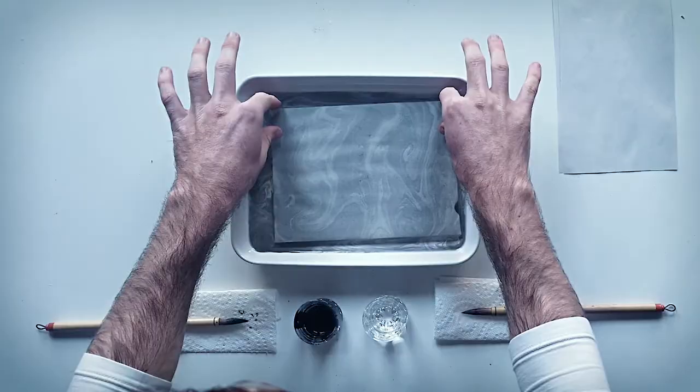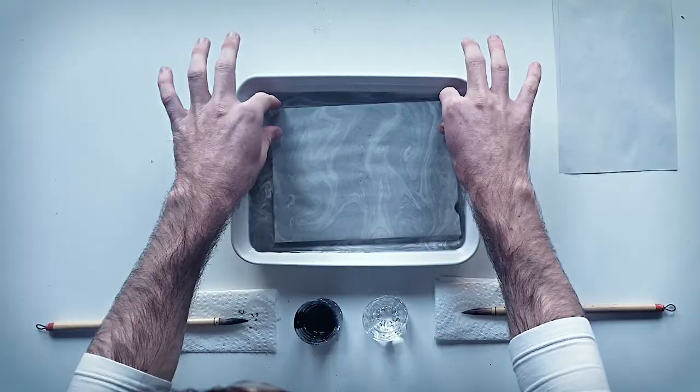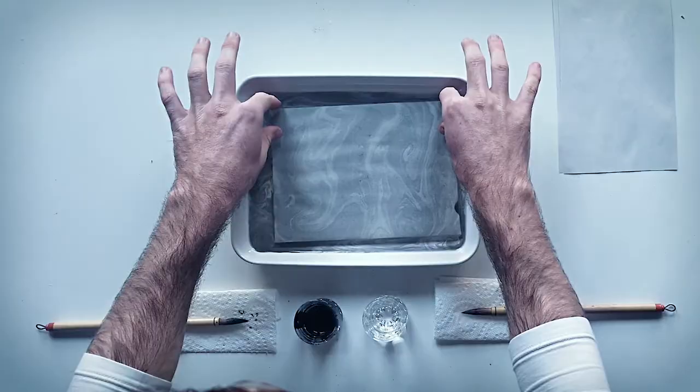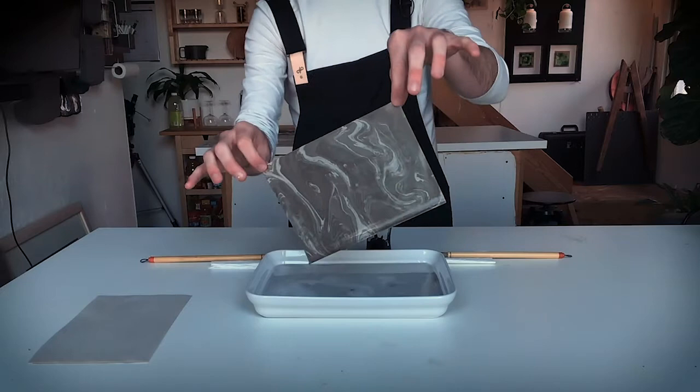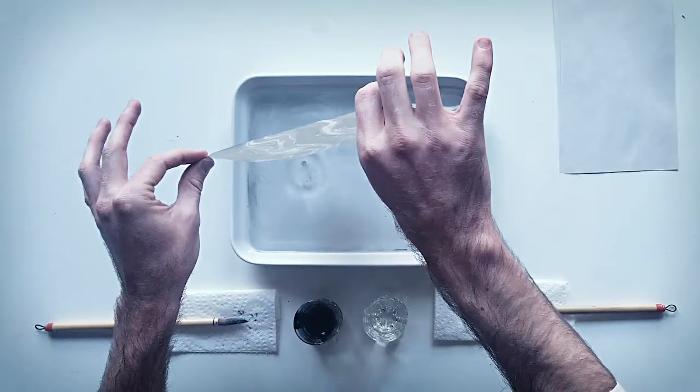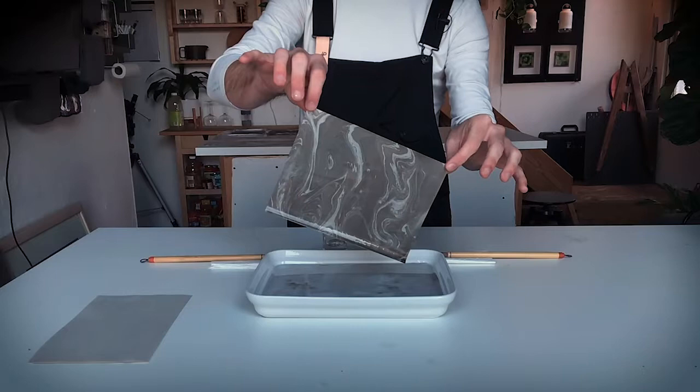Press it down to make sure that the whole piece of paper has gotten nice and soaked up by the water. And then lift it up. And there you go. All your swirls are now trapped in the piece of paper. Let the excess water run off the edges before you transfer it over to your plastic wrap. And then lay it nice and flat to dry.